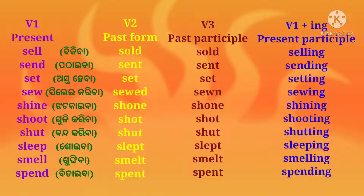Set (astahiba): second form — set; third form — set; fourth form — setting. Sew (silayi kariiba): second form — sewed; third form — sewn; fourth form — sewing. Sign (jhattakaiiba): second form — signed; third form — signed; fourth form — signing.